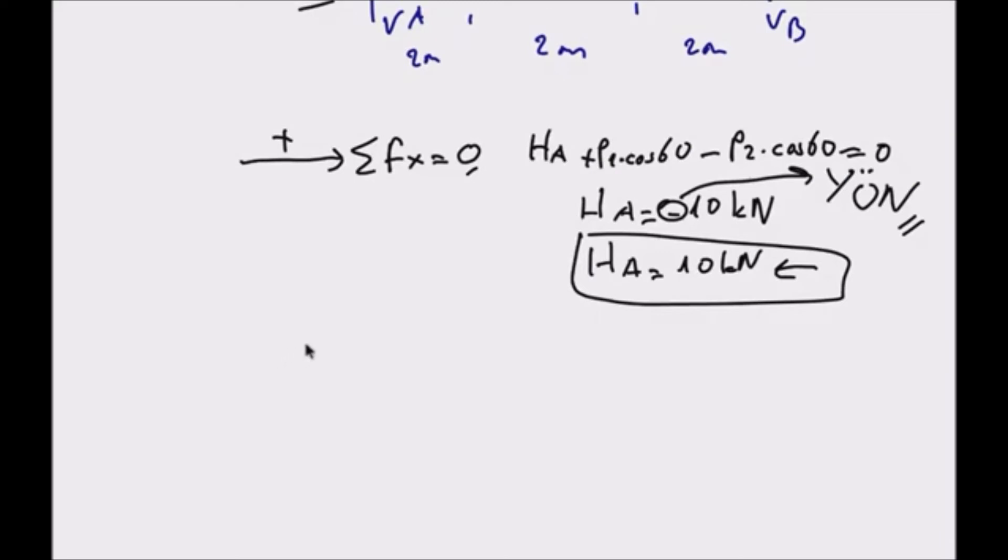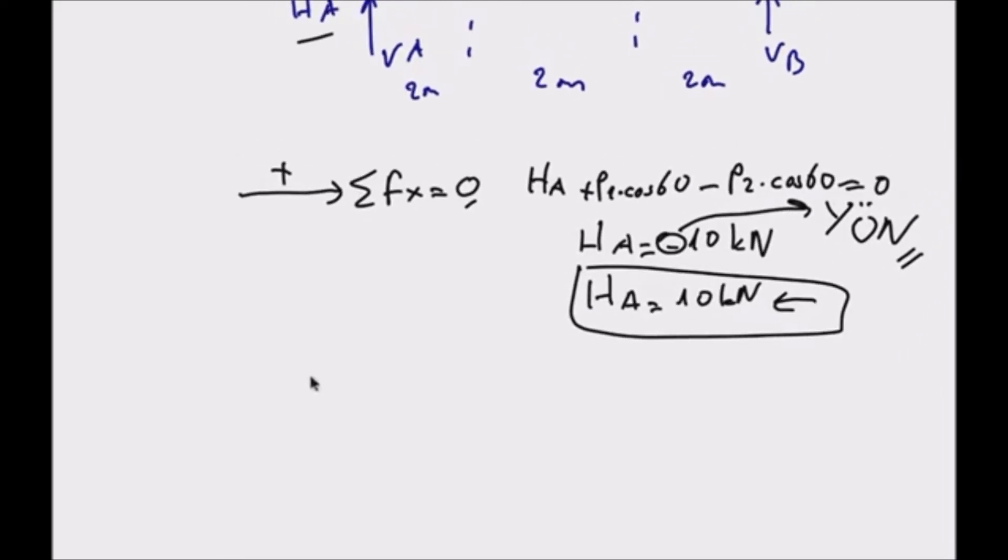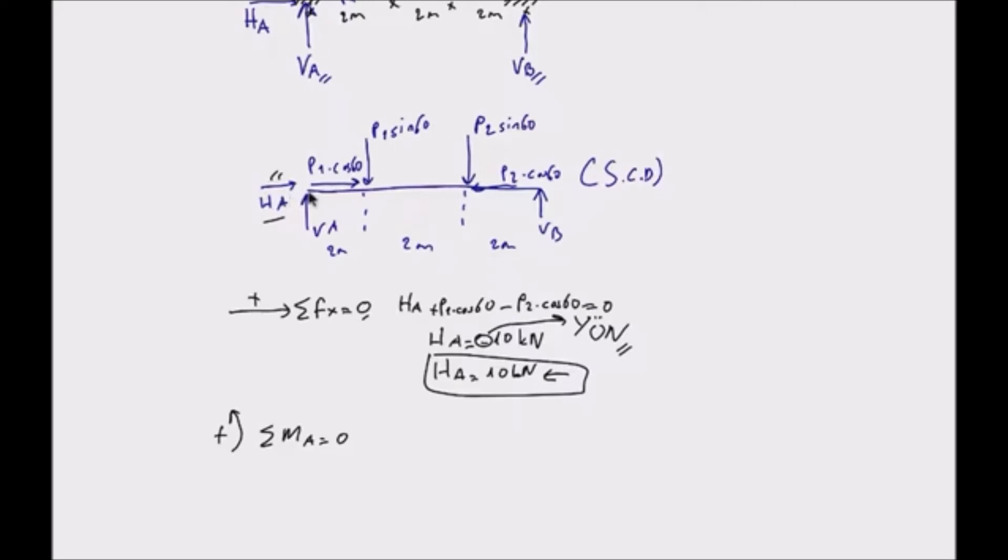The second of the three equations is the moment. Total MA is zero. I accept positive to the counterclockwise. Now I write these equations. The moment is based on point A. Moment is the vertical distance times the force. Therefore, the moment of VA is zero because it has no distance to point A. Furthermore, P1 and P2 have no vertical distance. Total distance is 6 meters.